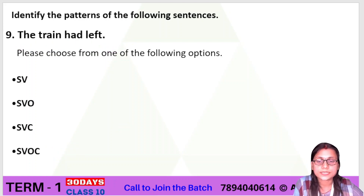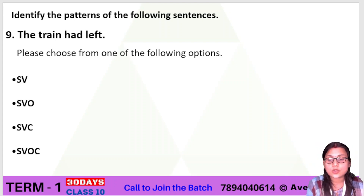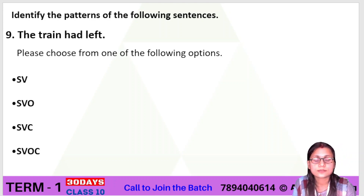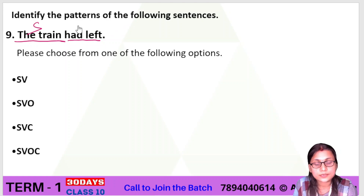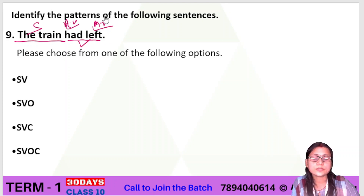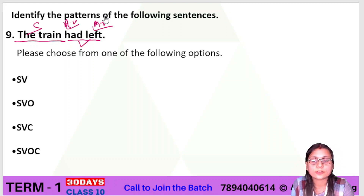Now another question: 'The train had left.' Quickly find the correct option — whether it is SV, SVO, SVC, or SVOC. Here, 'the train' is the subject, and 'had left' is a compound verb phrase where 'had' is the auxiliary verb and 'left' is the main verb. Since there is no object or complement, the pattern is simply SV. All of you have given the right answer — thank you.